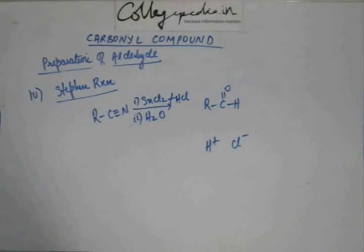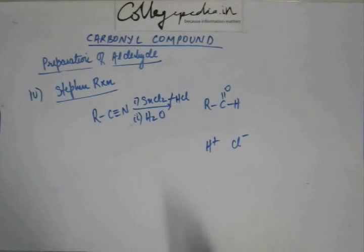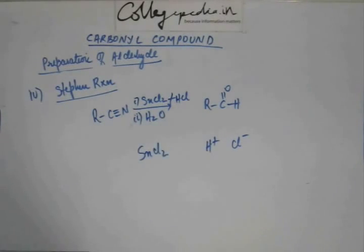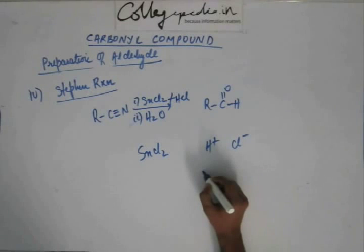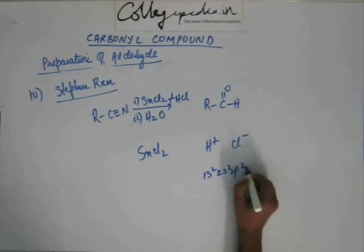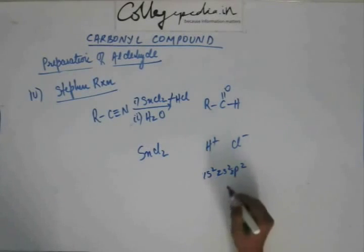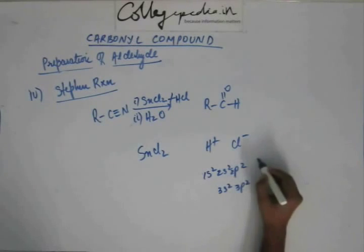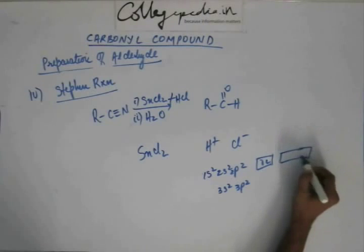This is how it is going to exist in the system. Now stannous chloride, SnCl2, what about this? What can it do? If you have studied S-block, in S-block you must have studied inert pair effect. And inert pair effect is something that tin belongs to carbon family. And the electronic configuration, carbon has electronic configuration of 1s2, 2s2 and 2p2. Below carbon you have silicon. Silicon will have outermost electronic configuration as 3s2 and 3p2.